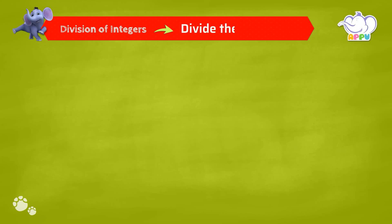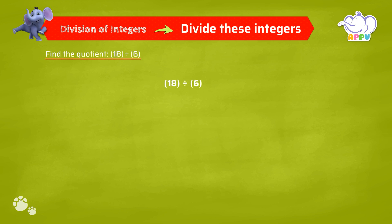Divide these integers. Find the quotient 18 divided by 6. We first divide 18 by 6, which equals 3.